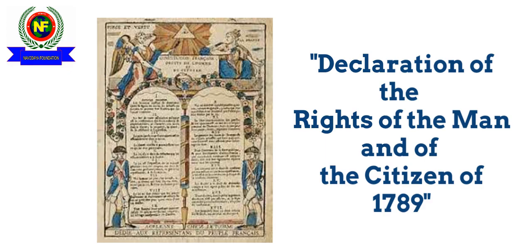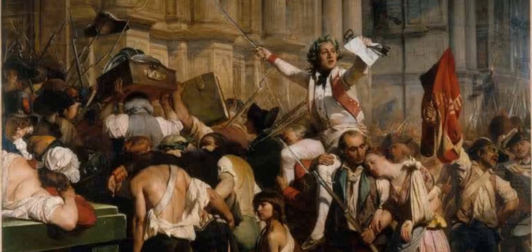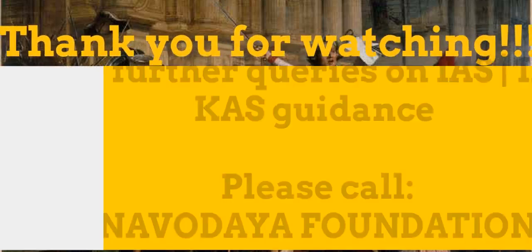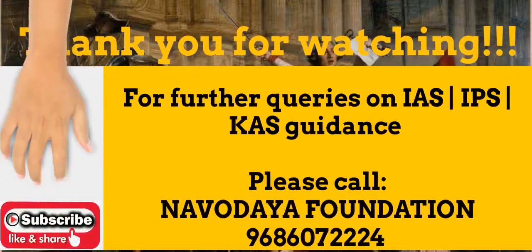In this video, we have seen how the Estates General was formed, how the National Assembly came into being, and the subsequent changes in the political and social sphere. In the next video, we will see how constitutional monarchy was transformed into a republic in France. Hope you have understood. We will shortly be coming up with the third part. Thank you for watching — please like, share, and subscribe to our channel.